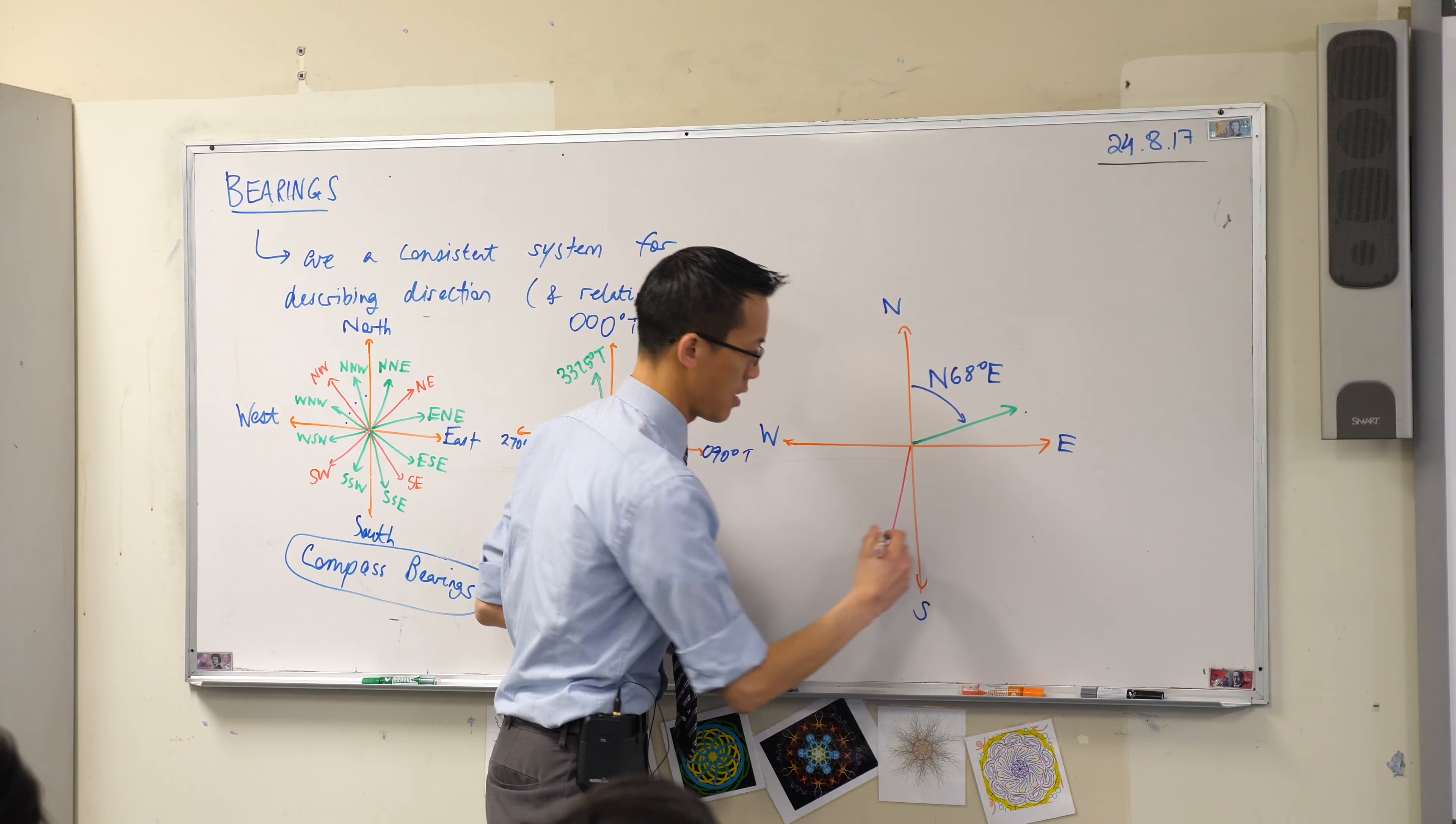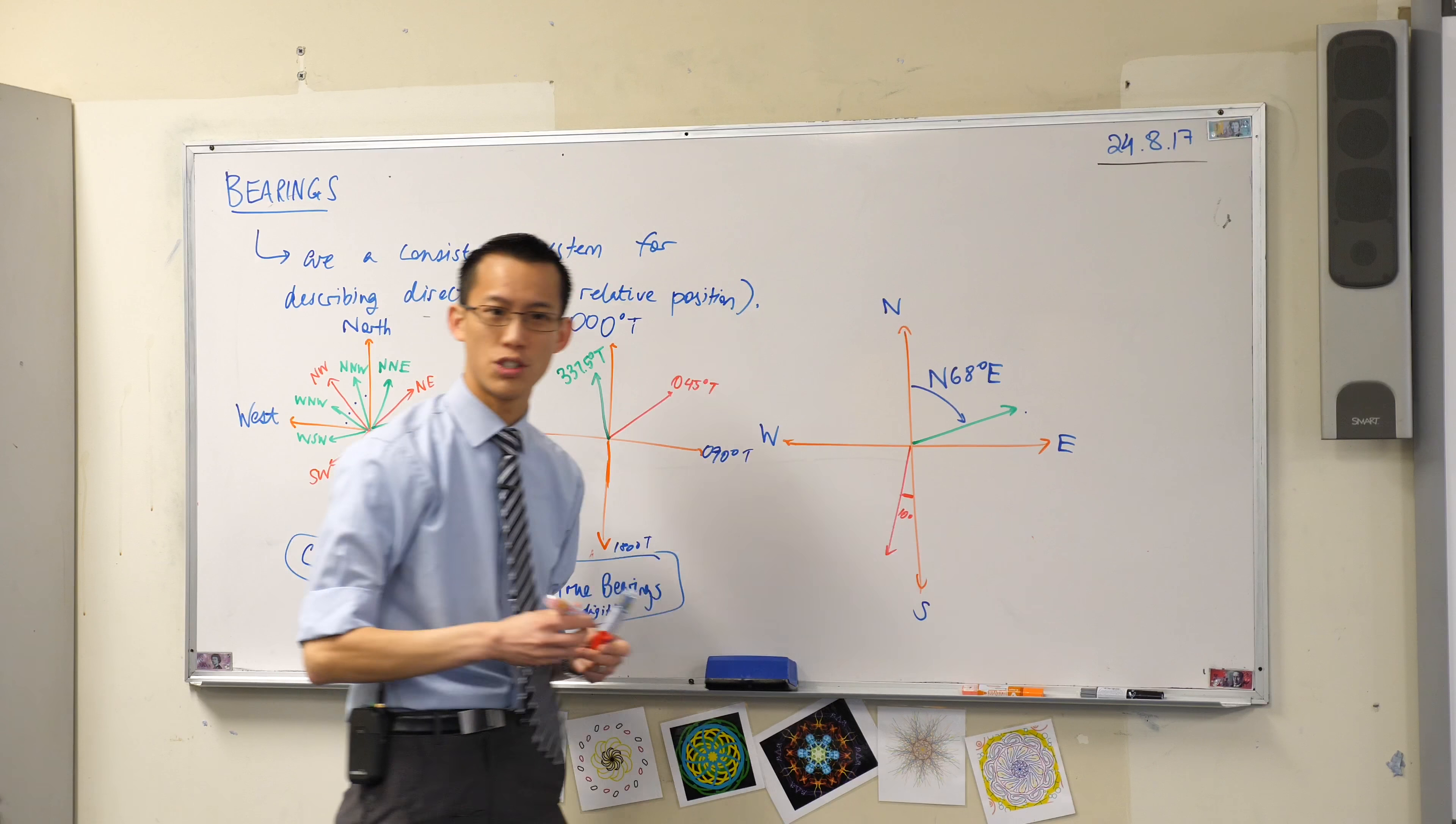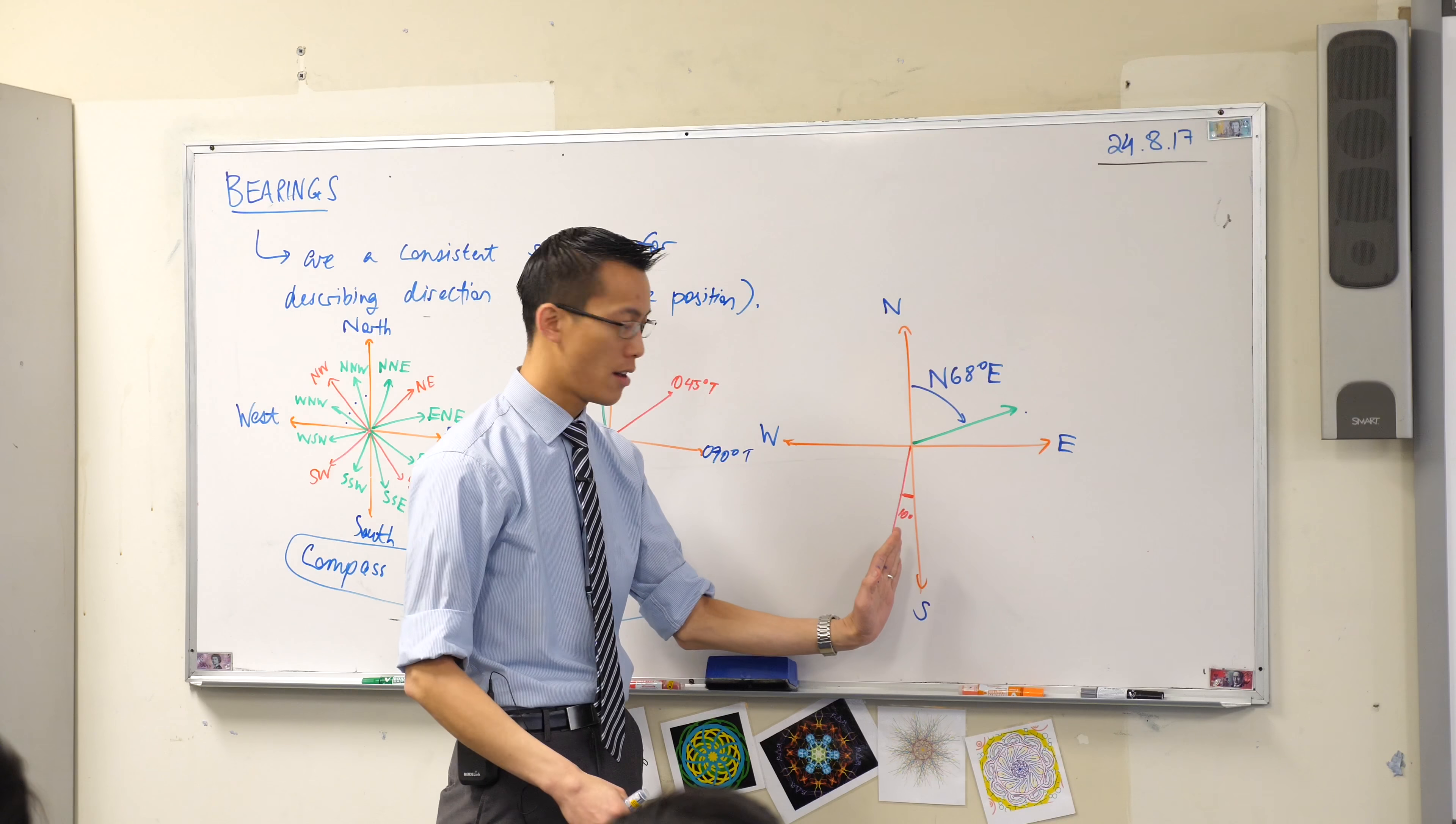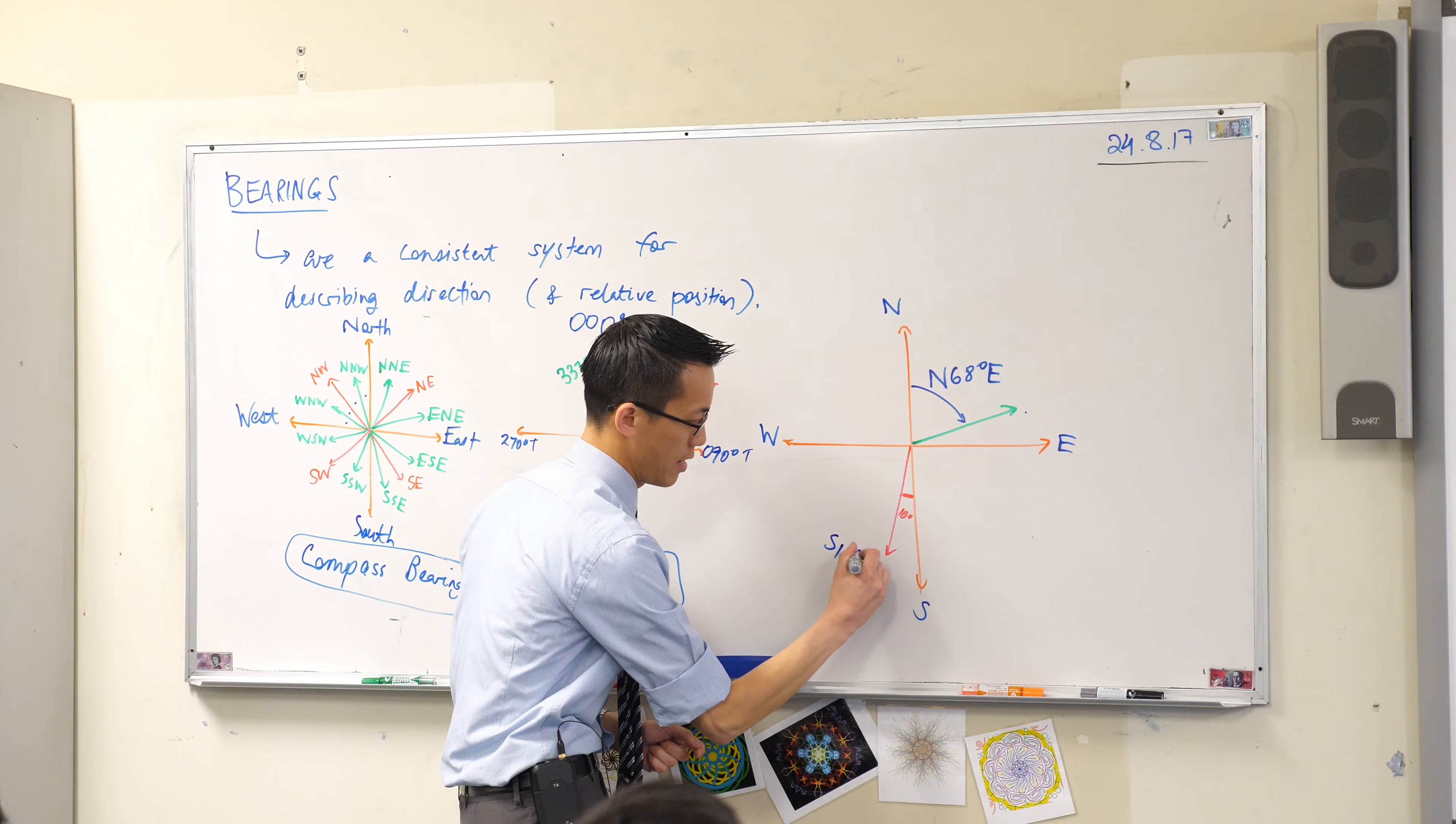If I wanted, say, let's pick a different random angle over here. Let's suppose this little angle in here was 10 degrees. So we always start from the vertical, so this is going to be from south. I haven't gone to the east, have I? I've gone to the west. So this would be south 10 degrees west.